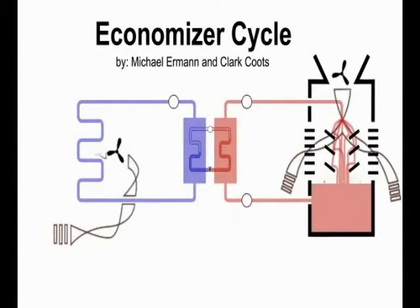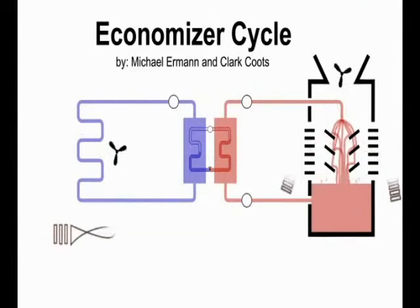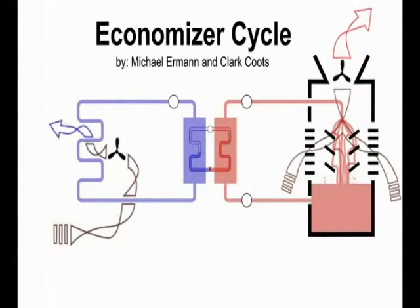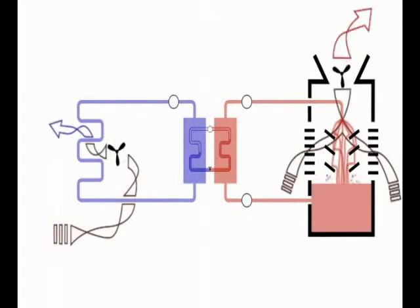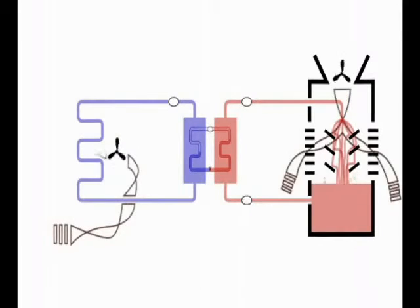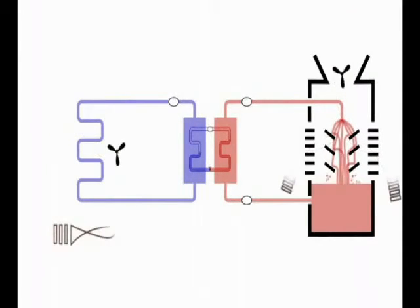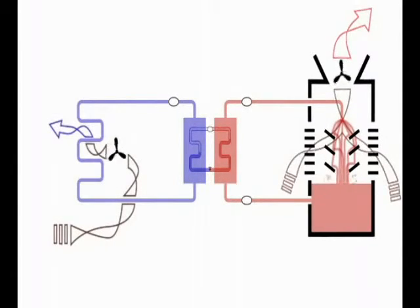Economizer cycle. Buildings, especially in the interior of large structures, often require mechanical cooling even on very cold nights. This is because the heat generated inside the building by people, lighting, and equipment will offset some of the heat losses through the building envelope.